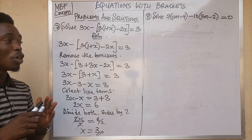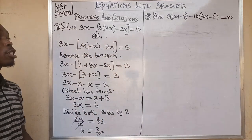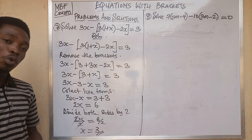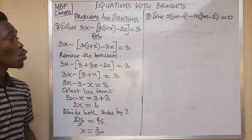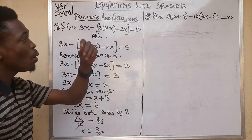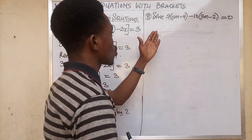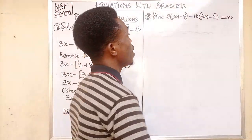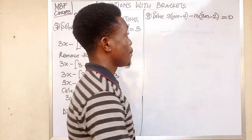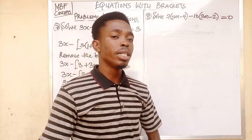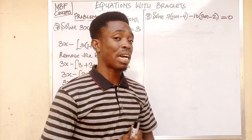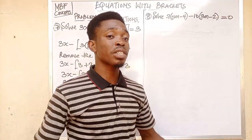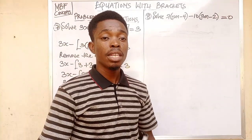We now head on to question number 8. We are asked to solve: 7 open bracket 5m minus 4 close bracket minus 10 open bracket 3m minus 2 close bracket, all equal to 0. This is an equation with brackets — here we have two brackets, and we follow the same process.